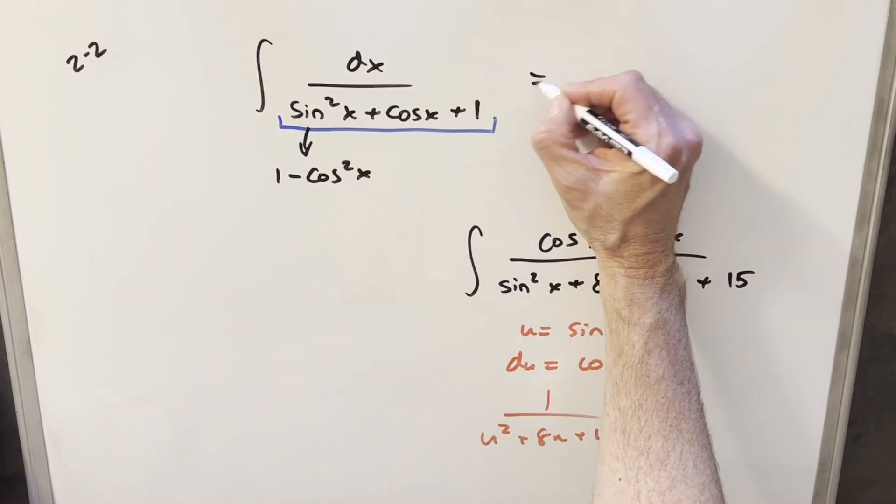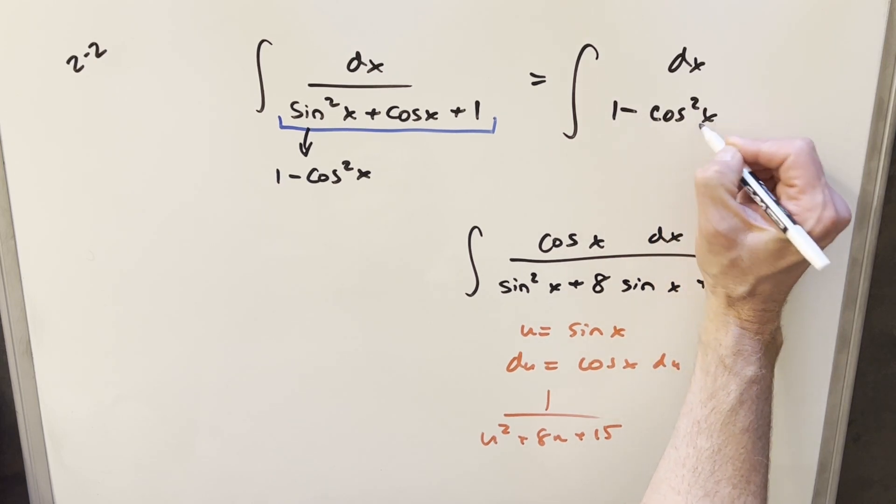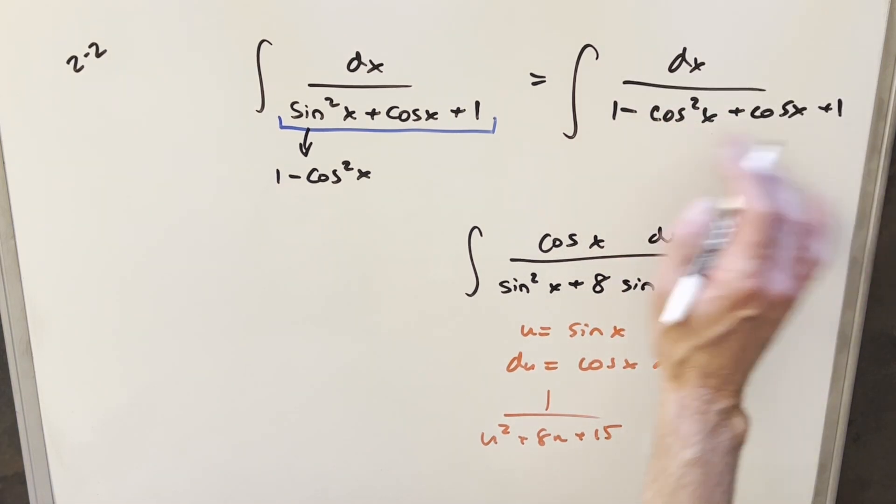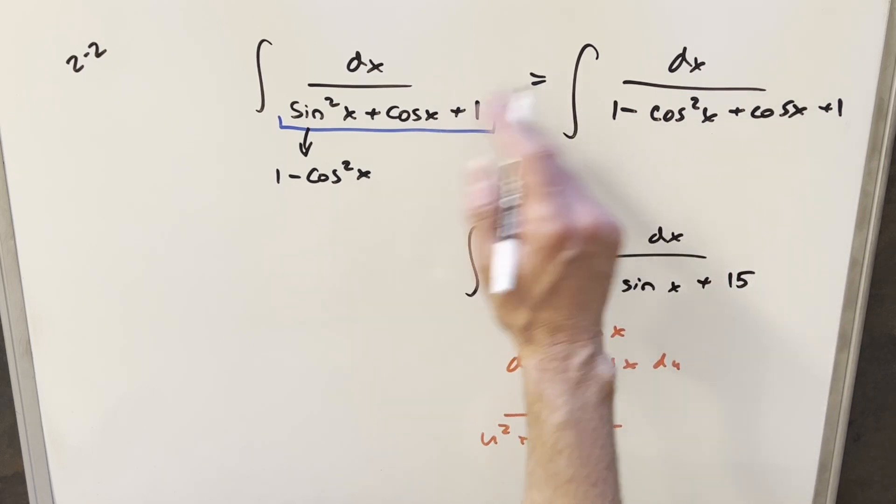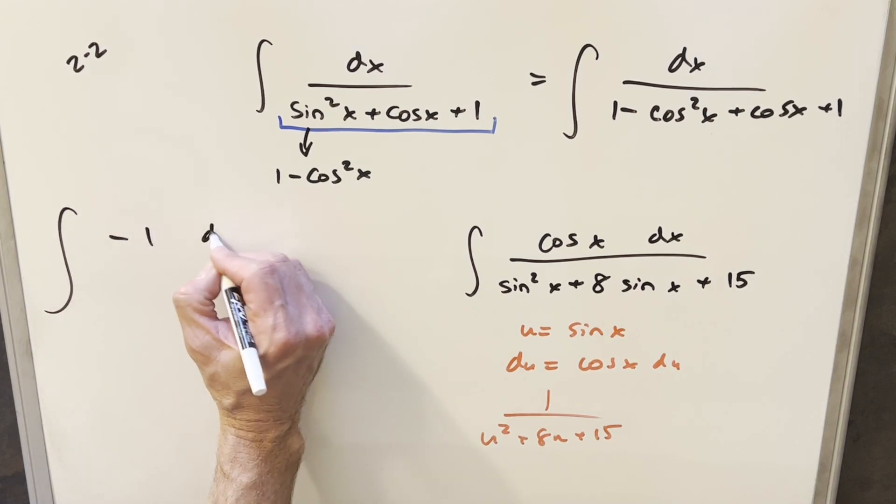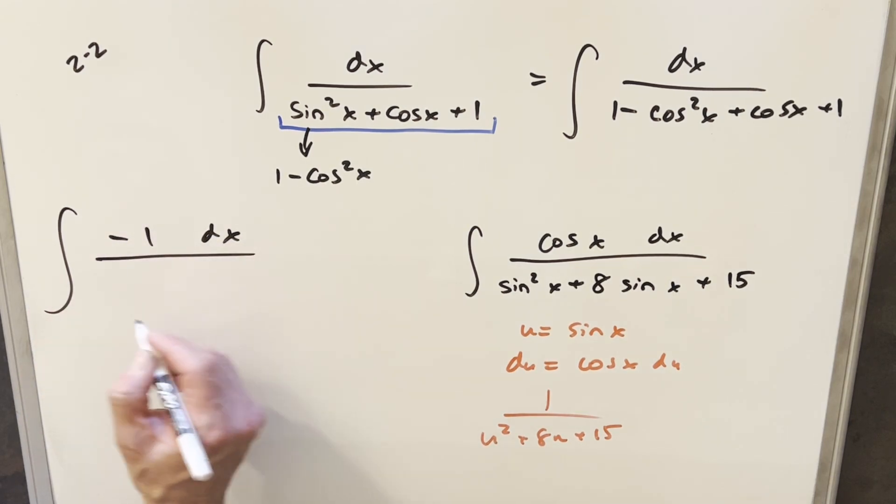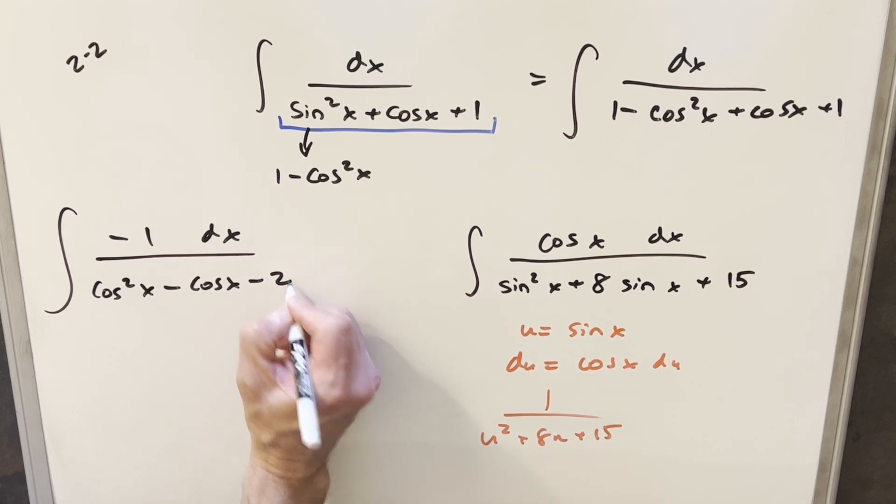When I do that and rewrite this, we write in our 1 minus cosine squared x. I can combine the 1 and 1 and get a 2. I also can bring this minus sign out, factor the minus sign out or put it in the numerator. Let's do it that way, I'll write this as like a minus 1 in the numerator. When I rewrite this, this is going to change the sign on everything. Now we're going to have positive cosine squared x minus cosine x and we'll have minus 2.